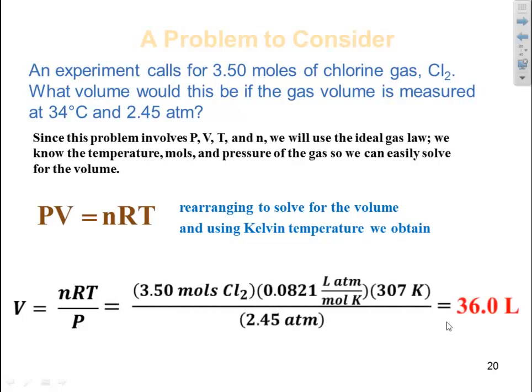N is given to us as 3.5 moles. R we memorize as 0.0821 liter atmospheres per mole Kelvin. Pressure is 2.45 atmospheres. Remember, the 34 degrees C was given to us, but we have to change that to Kelvin, which is 307 Kelvin.